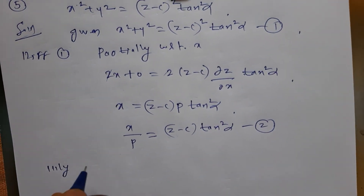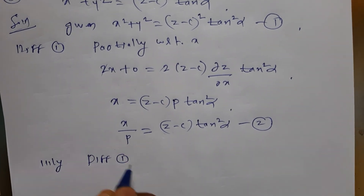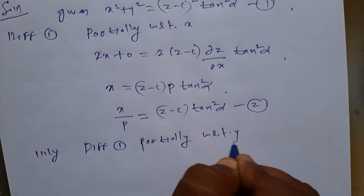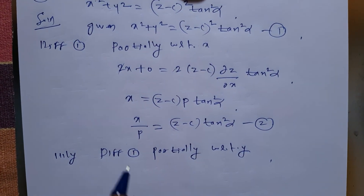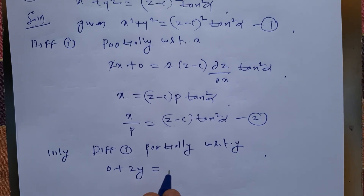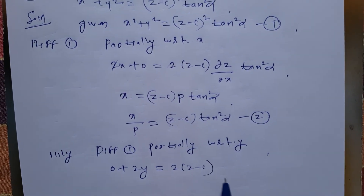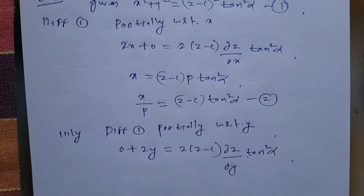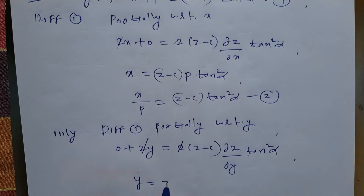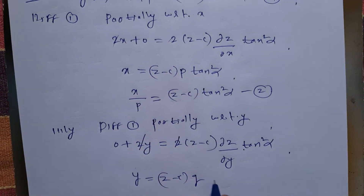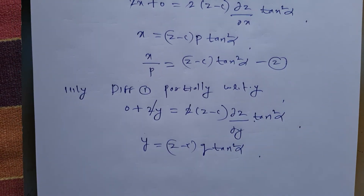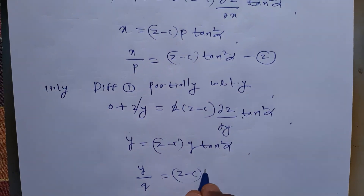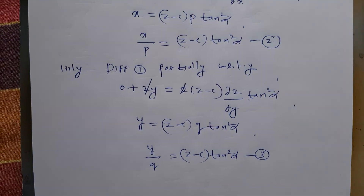Similarly, differentiating equation 1 partially with respect to y: the first term gives 0 and the second term gives 2y. The RHS gives 2(z - c)·(dou z/dou y)·tan²α, where tan²α is constant. Both sides, 2 cancels. So y = (z - c)·q·tan²α. Therefore y/q = (z - c)·tan²α. I denote this as equation number 3.